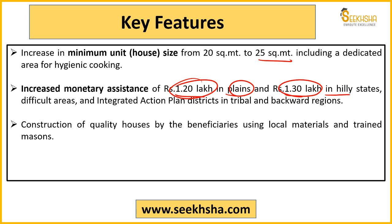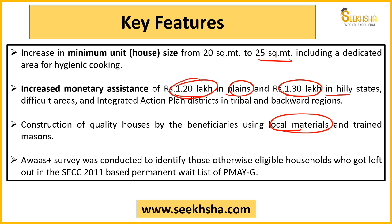The scheme also states that good quality material should be used for the houses, and efforts should be made to use as much local material as possible. Locally trained masons and locally trained craftsmen should be given employment, so that a twin effect is achieved - the economy of that area will also grow.